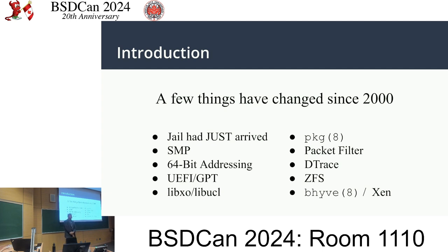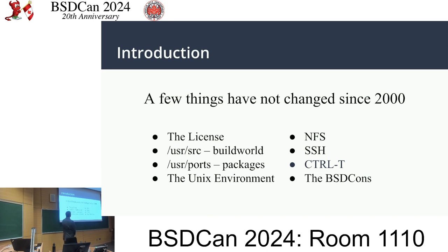Package came along — who remembers package add and the old syntax? Packet Filter came in from OpenBSD, not to mention DTrace and ZFS from Solaris, and Beehive and Xen. Show of hands — who knows that FreeBSD is a somewhat capable Xen platform? I've been working with Roger to make that happen. It's an under-appreciated thing, especially with all the recent news in hypervisors. On the unchanged side: the license, the copyright — just give credit where credit is due. User source, build world. You run a few commands; we now have lots of cores, which makes it a lot faster than it used to be.